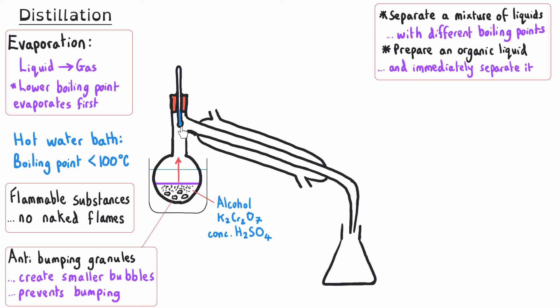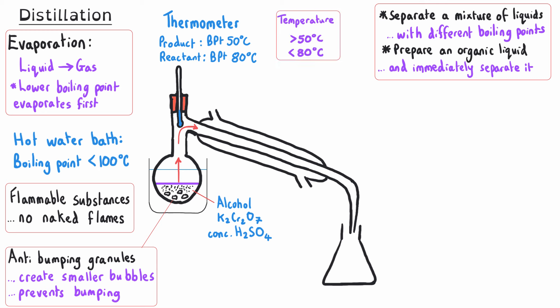From there the vapor will encounter our thermometer, which tells us the temperature of the gases moving into the condenser. For instance, if we know our product has a boiling point of 50°C and our reactant has a boiling point of 80°C, then keeping the temperature above 50°C but below 80°C will allow us to produce vapors of our product rather than our reactant. If chemicals have more similar boiling points, we might need to use fractional distillation instead of simple distillation for more careful and sensitive separation.